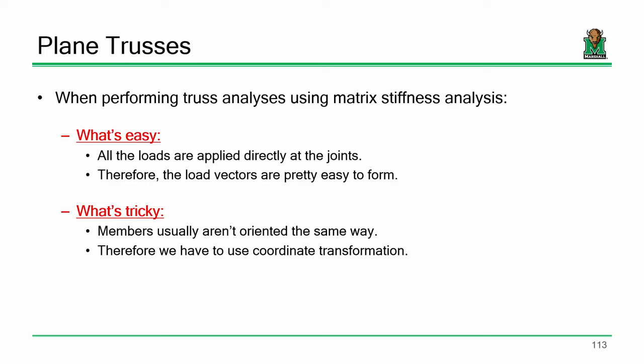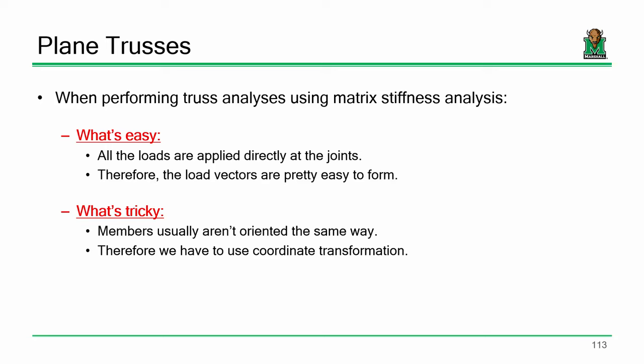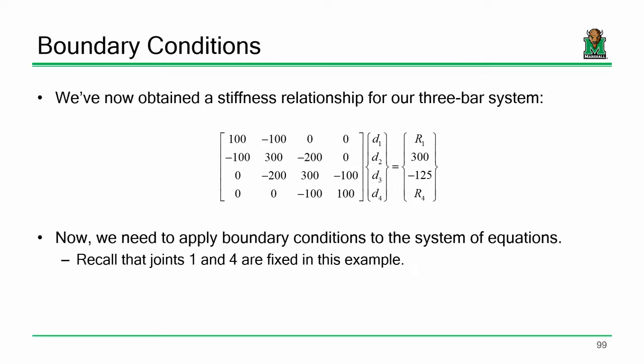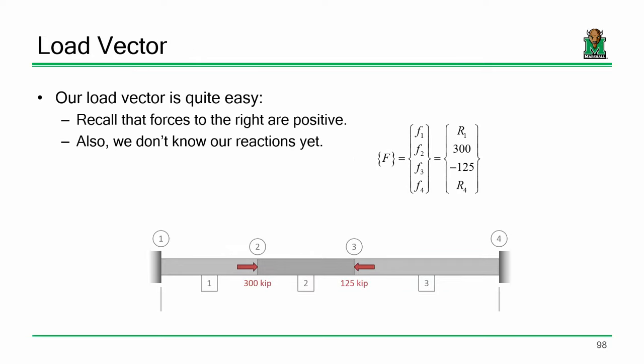What's easy about truss elements — one thing on a grand scale is the load vector is simple. That might seem like an odd observation right now, but it won't be when we talk about beams. The difference between bar analysis and beam analysis is that with bar elements we had loads applied directly at the joints. For beams, something like a simply supported beam with a uniformly distributed load, those loads are not applied directly to the joints, which makes it more complicated. Trusses are easy in that regard because the loads are applied directly to the joints.